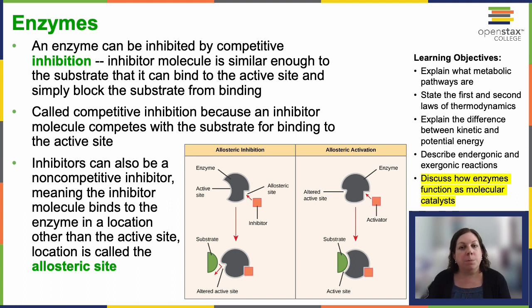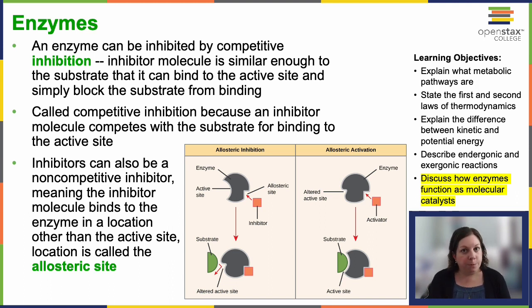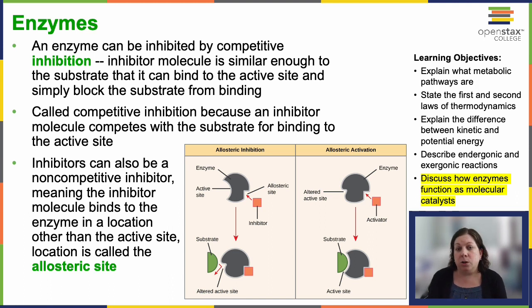When an inhibitor binds to the allosteric site, it causes a conformational change — a shape change — that reduces enzyme activity. Basically, it makes it so the active site is no longer quite the right shape for the substrate to bind.